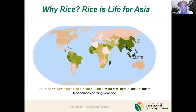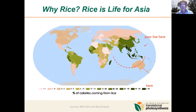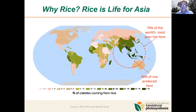So why rice? Rice is a very important food crop for the world — it's the number one source of calories globally. Right on Australia's doorstep in Asia, 70% of the world's poor people live there, living on less than two dollars a day, and 90% of rice is produced right there. The Gates Foundation and the C4 Rice project is focused solely on one thing: to improve photosynthesis and yield in rice.